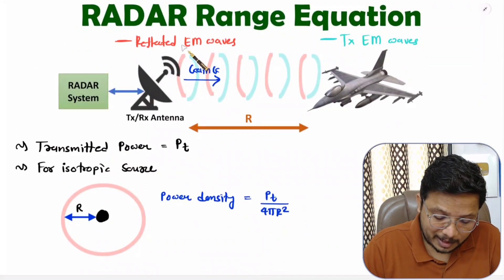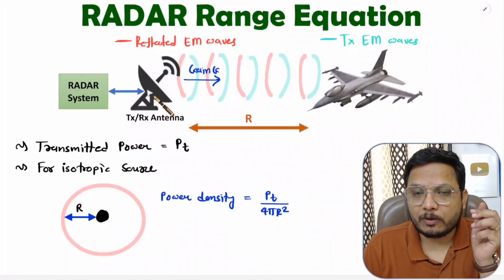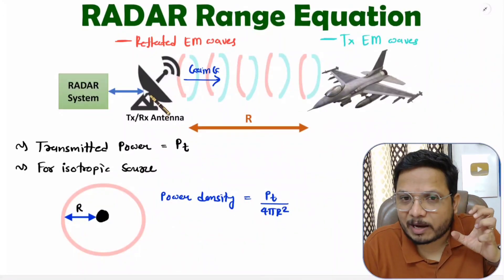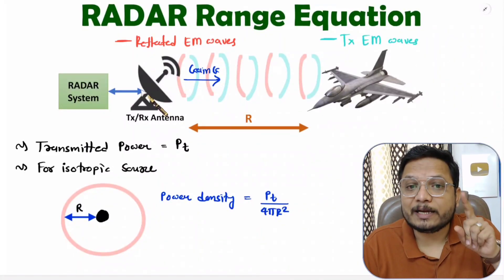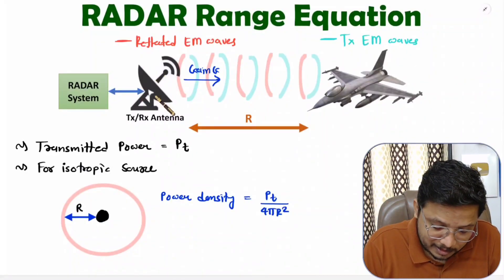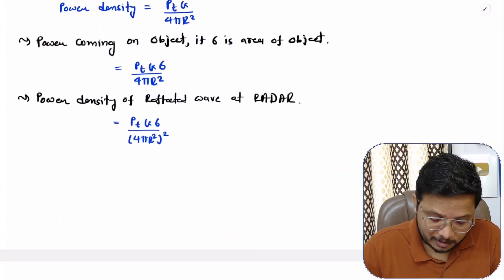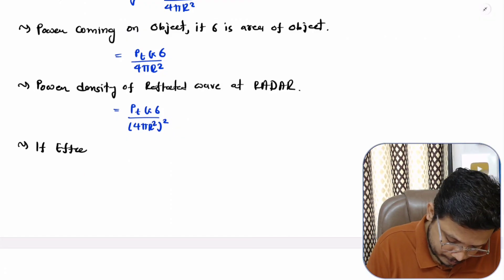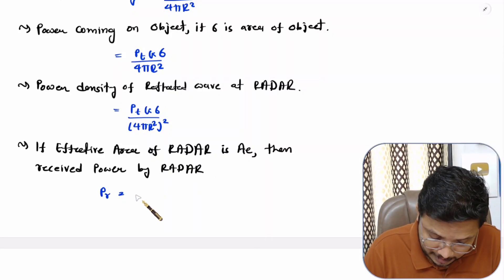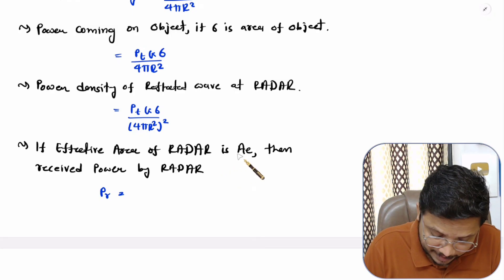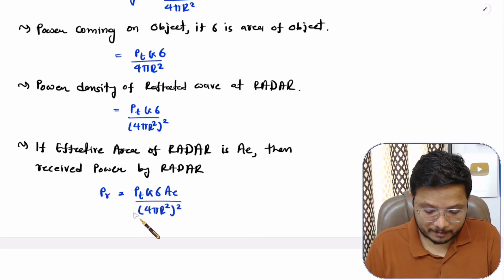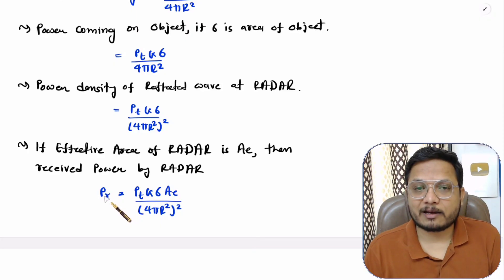Now, if the radar antenna has an effective area Ae, then the reflected power received is power density multiplied by Ae. So if the received power is Pr, then Pr equals Pt·G·σ·Ae divided by (4πr²)², which equals Pt·G·σ·Ae divided by (4π)²·r⁴. We now have the received power at the radar.